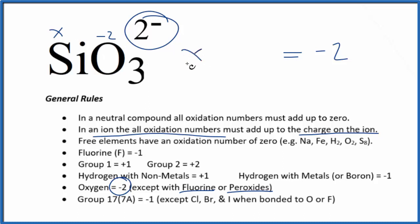X plus 3 times minus 2, that's minus 6, equals minus 2. Add 6 to both sides, and you get a positive 4 for X. That means the oxidation number on the Si, that's going to be positive 4.